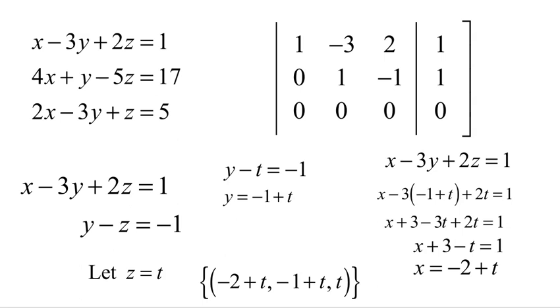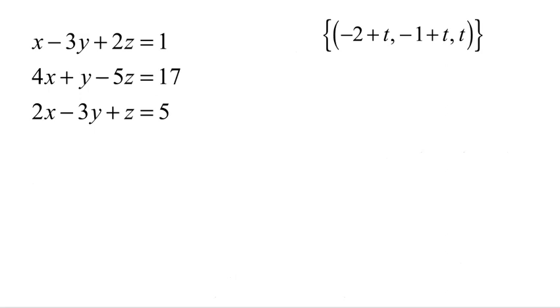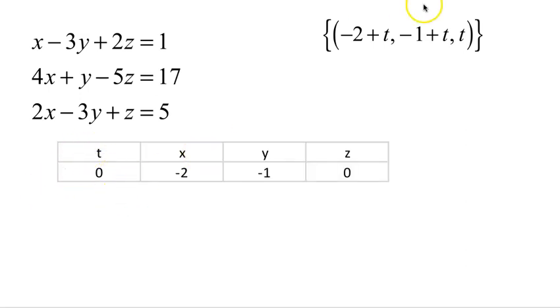These are three planes that intersect in a line. Think of a binding of a book. If you have three pages all stapled together, they intersect at that line of intersection. We want to describe that a little bit better. So I want to determine what are some values, what are some points on that line. I'm going to choose values for t and then determine values for x, y, and z. For example, if t is 0, x is negative 2 plus 0 or negative 2, y is negative 1, z is 0. So the point (negative 2, negative 1, 0) is true for all three of these equations.